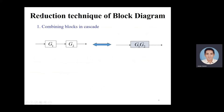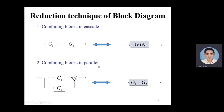Now let's understand the reduction techniques of a block diagram. First, combine blocks in cascade: if two blocks G1 and G2 are in cascade, they combine as the multiplication G1*G2. Second, combine blocks in parallel: if two blocks G1 and G2 are in parallel and add at a summing point with both positive signs, the equivalent is G1 + G2.